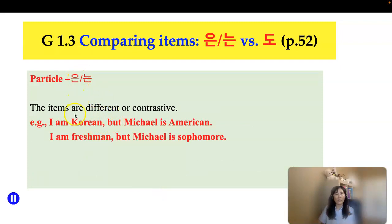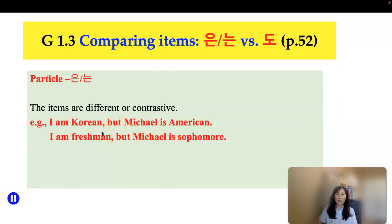Particle 은/는 marks items that are different or contrastive. Let's compare these two sentences: 'I'm Korean' — 저는 한국 사람이에요 — 'But Michael is American.' Michael은 is American. So when it comes to nationality they are different. You indicate the other person is different by adding particle 은/는 to Michael. Michael은 미국 사람이에요.